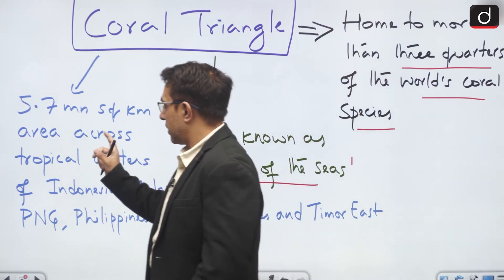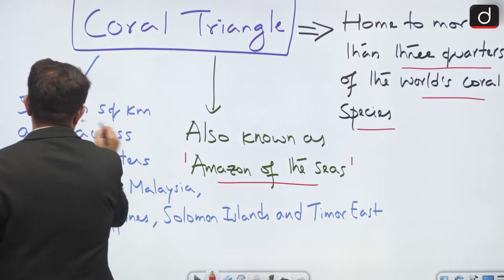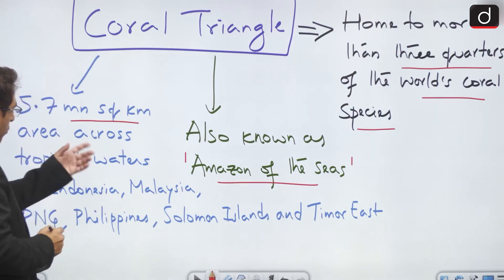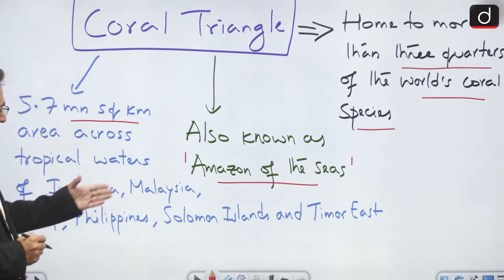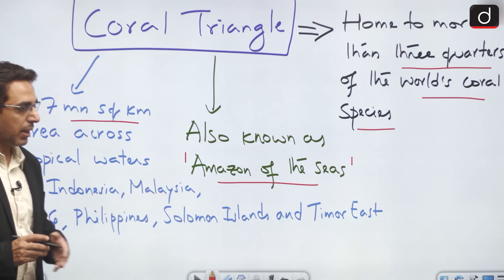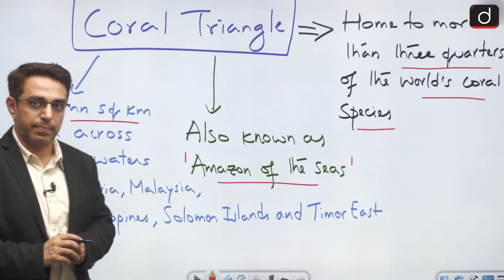In totality, the Coral Triangle covers 5.7 million square kilometers across the tropical waters of Indonesia, Malaysia, Papua New Guinea, Philippines, Solomon Islands, and Timor-Leste.